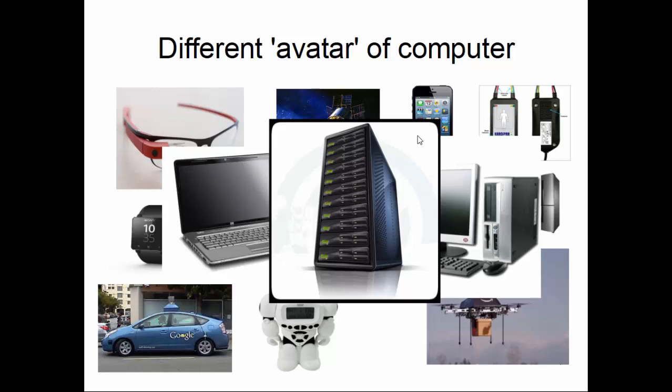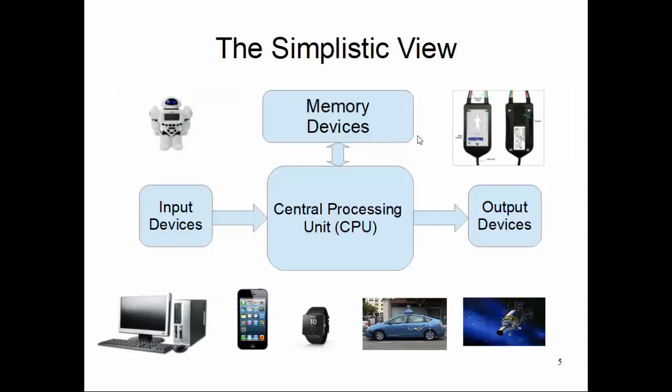What is a computer by definition? A computer is a system which can compute — it can process some information, crunch some numbers, whatever term you want to use — but at the bottom line, it computes.